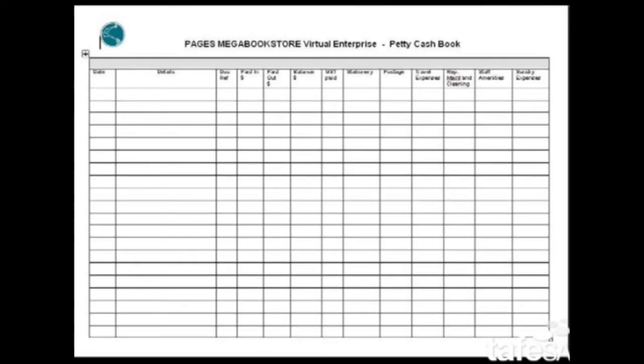Here is Page's petty cash book. Take a moment to look at each of the column headings. The date, the details, the voucher number, the amount and the GST are all recorded first.